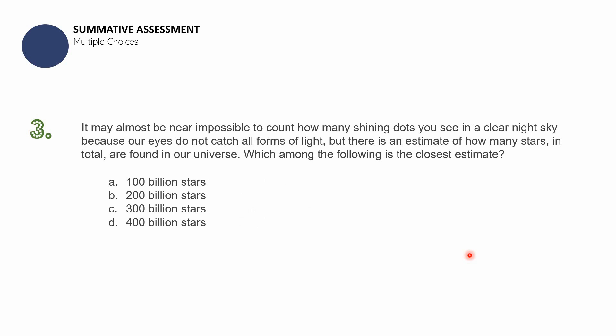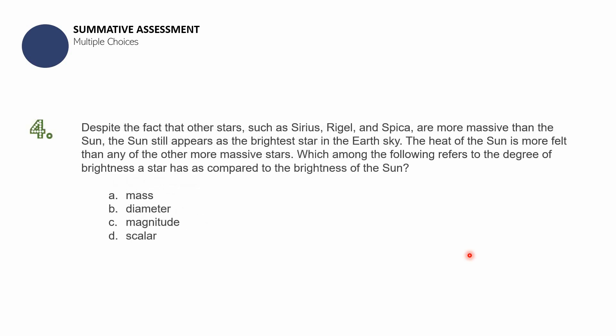Question number three: it may be almost impossible to count all the stars in a clear night sky because our eyes do not catch all forms of light. But there is an estimate of how many stars are found in our vast universe. Which among the following is the closest estimate? A — 100 billion stars; B — 200 billion stars; C — 300 billion stars; or D — 400 billion stars? Question number four: despite the fact that other stars such as Sirius, Rigel, and Spica are more massive than the Sun, the Sun still appears as the brightest star in Earth's sky. Which among the following refers to the degree of brightness a star has as compared to the brightness of the Sun? A — mass; B — diameter; C — magnitude; or D — scalar?